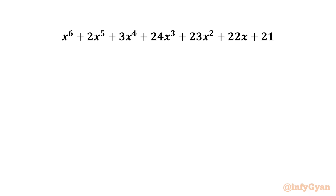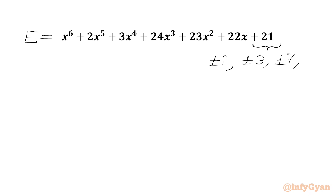Let's get started by writing the expression equal to e first. Now we are going to use the rational root theorem. I need to know the eligible factors of constant 21. I can write plus minus 1, plus minus 3, plus minus 7, and plus minus 21.